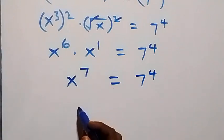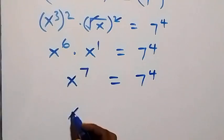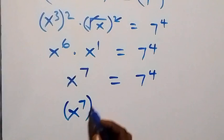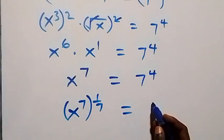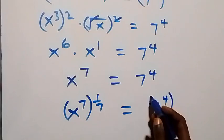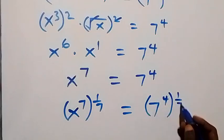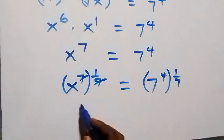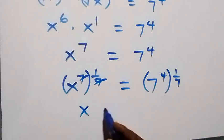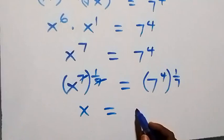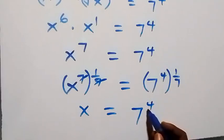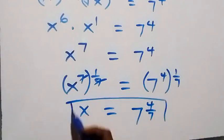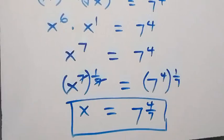To remove this power seven, we raise both sides to one over seven. So we have x raised to power seven, raised to power one over seven. Here this power multiplies — seven cancels out — so we are left with x equals to, also this power multiplies, and we have seven raised to power four over seven. So the value of x is seven raised to power four over seven.